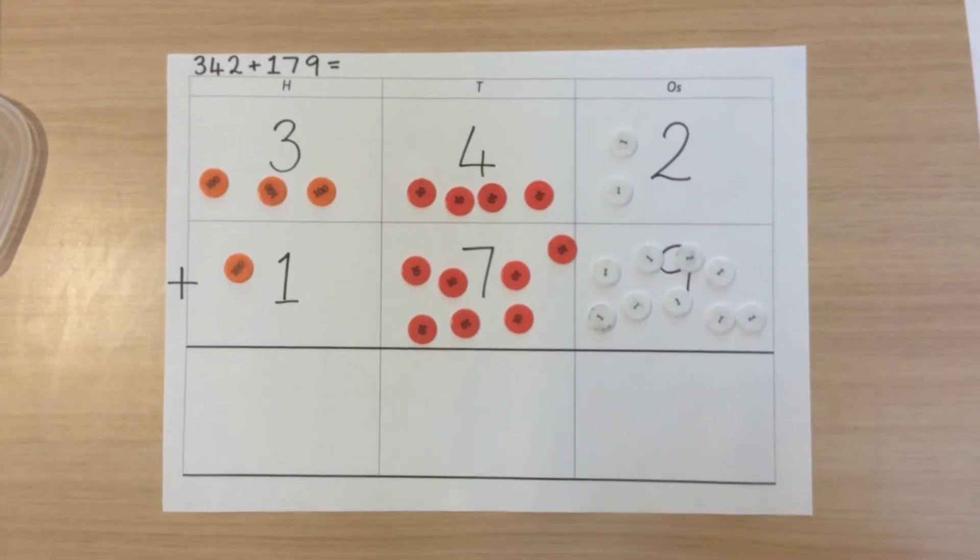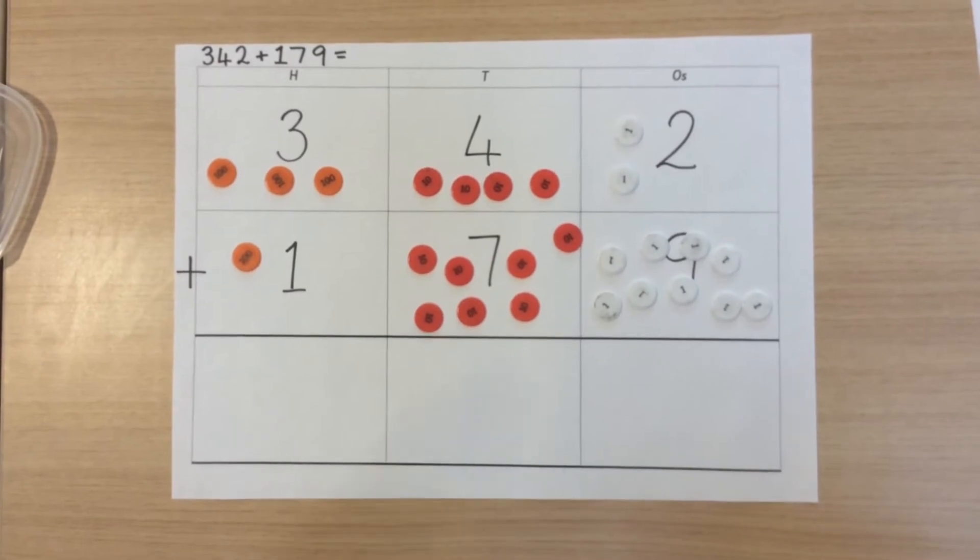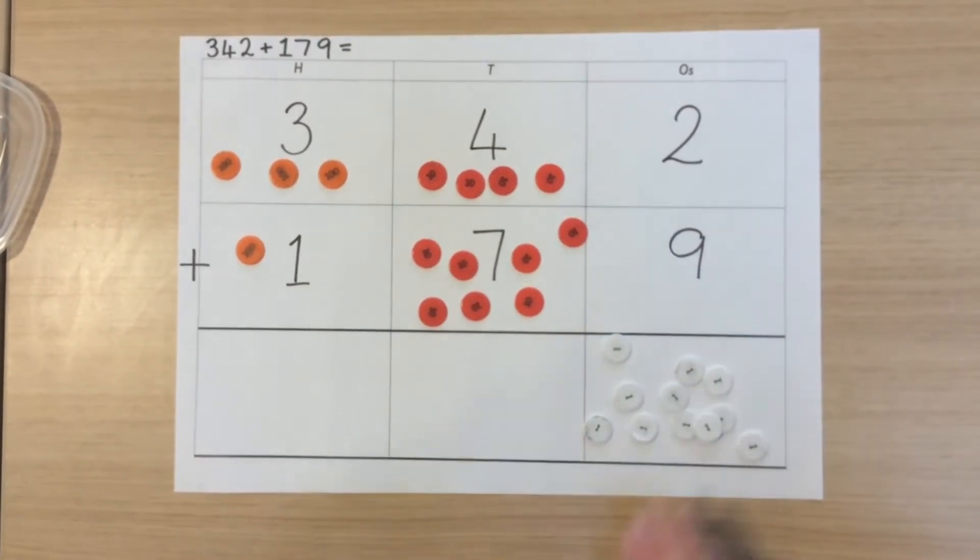As with any calculation like this, we begin in the smallest place value column, in this case the ones. We begin by combining two and nine. This should leave us with eleven.